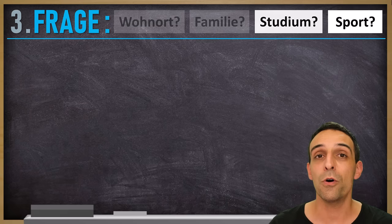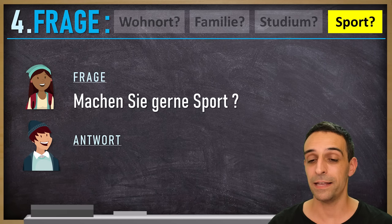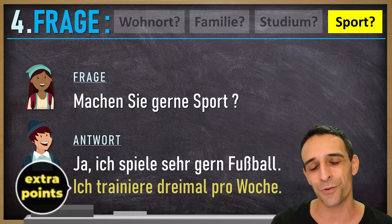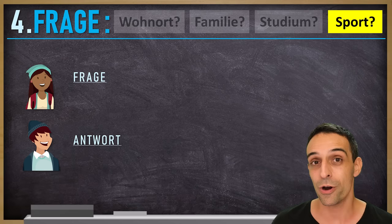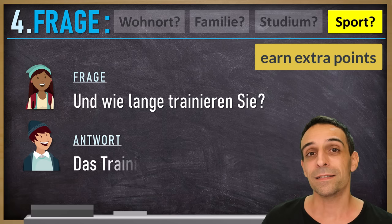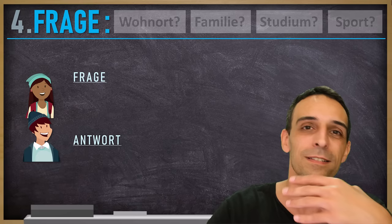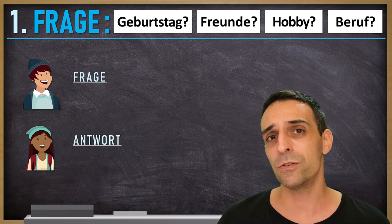For the fourth and last topic, Sport, I ask: Machen Sie gerne Sport? The answer: Ja, ich spiele sehr gern Fußball. Ich trainiere dreimal pro Woche. The person answering is showing off to earn more points. If you also want more points, ask a second question reacting to their answer: Und wie lange trainieren Sie? Answer: Das Training dauert zwei Stunden. With that your part of asking questions is done, and now your partner asks you questions.